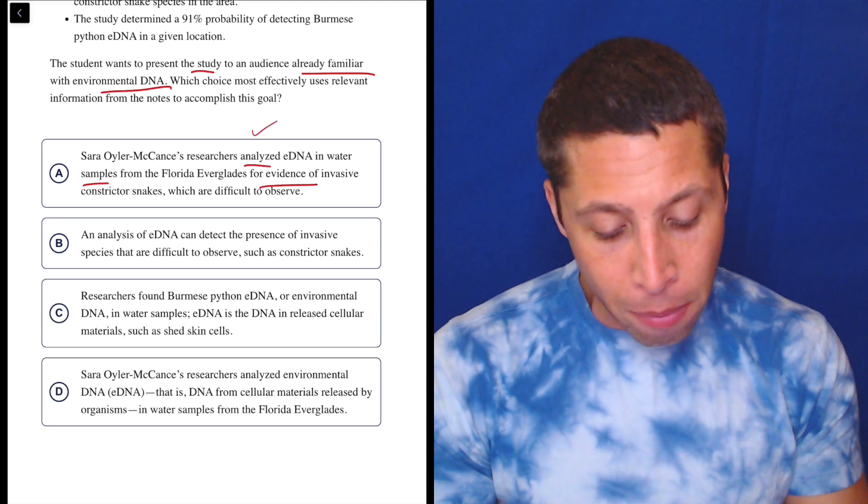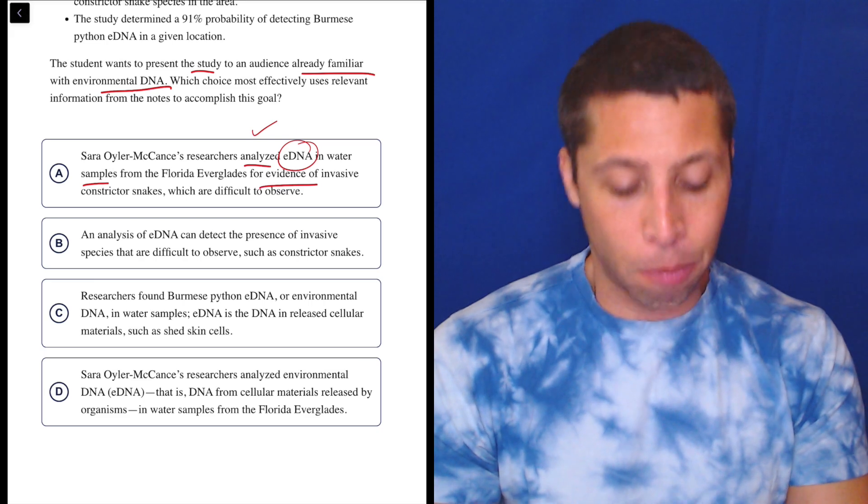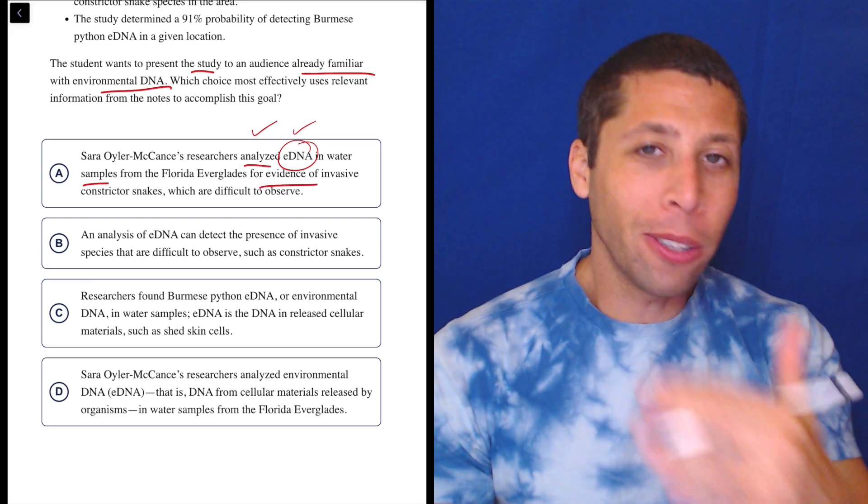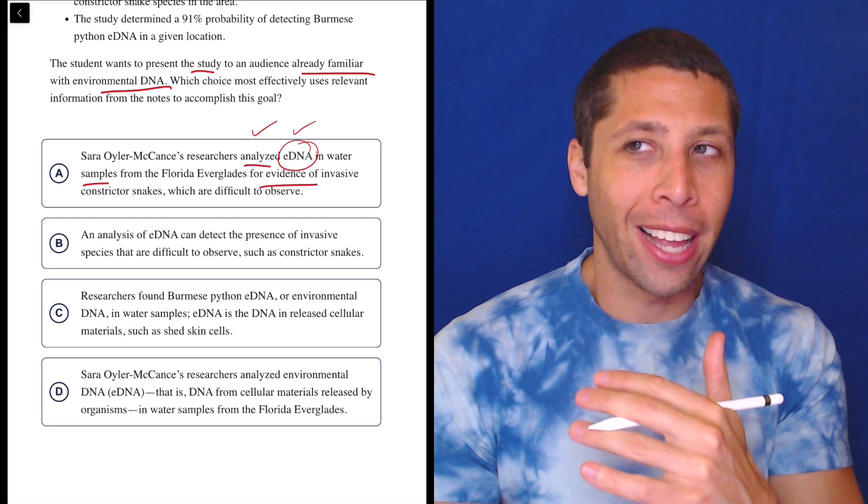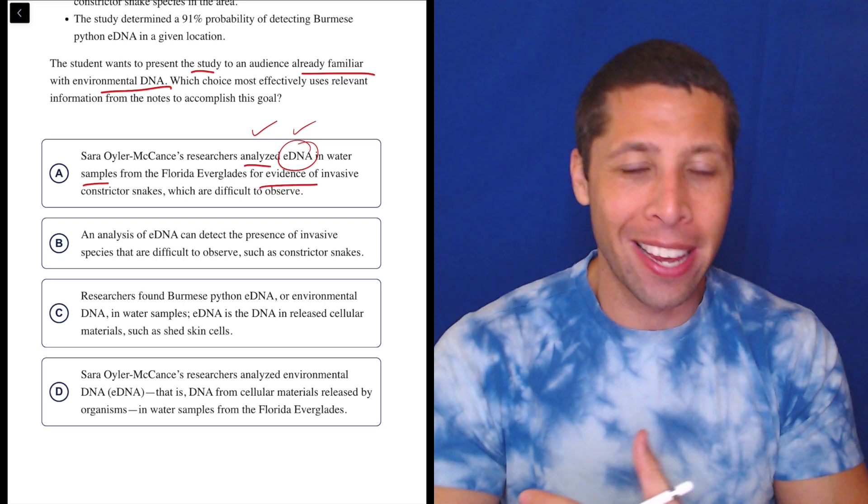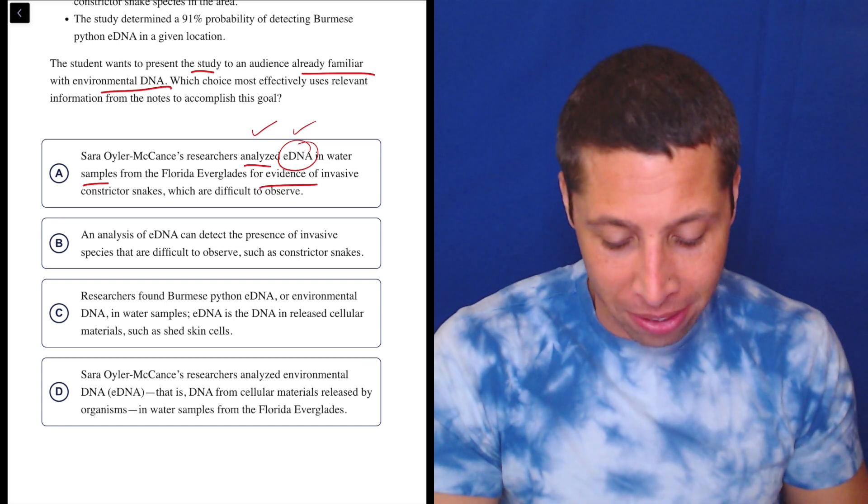Then the 'already familiar' part - well, the fact that they're not bothering to define this is pretty good. It's not so much that I'm confidently checking off that second goal. It's more that I'm not crossing it off. It doesn't bother me the way they've introduced eDNA. It's fine. So let's look at some other examples.